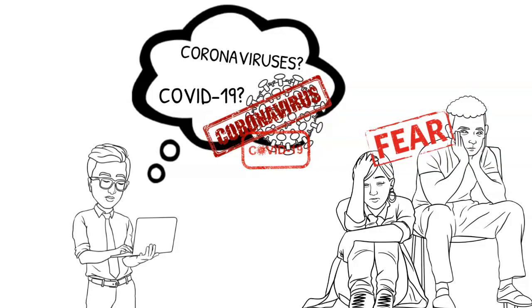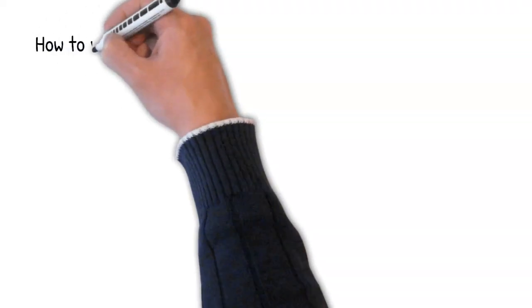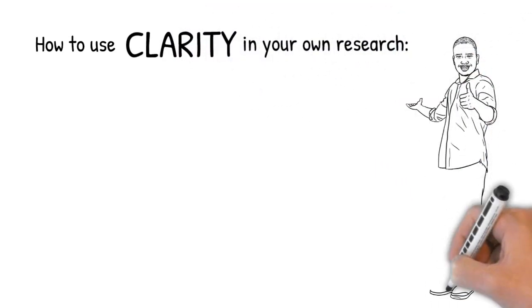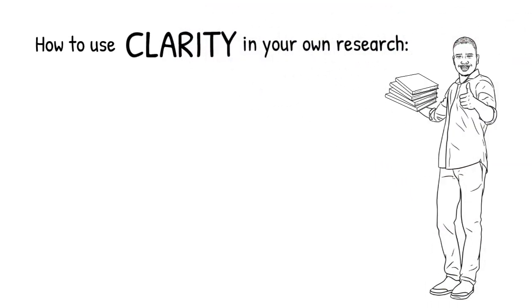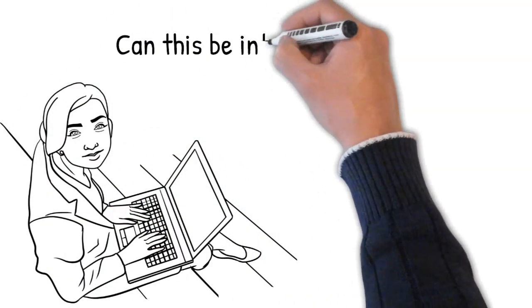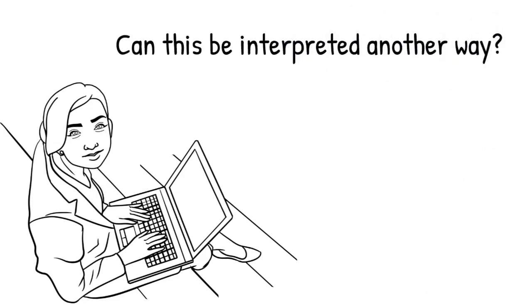Now that we've seen how a lack of clarity can be dangerous, let's discuss how to avoid these errors in your own research. It's actually quite simple, but it requires hard work. Whether you're researching or writing, always ask yourself, can this be interpreted another way? If so, you have more work to do.